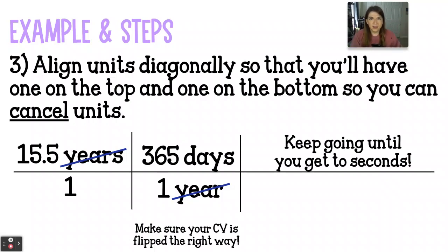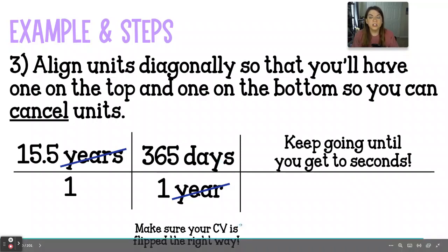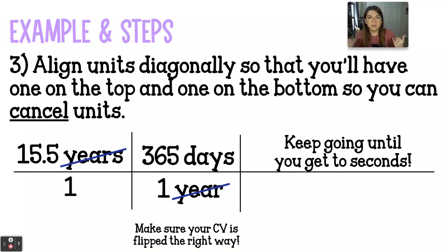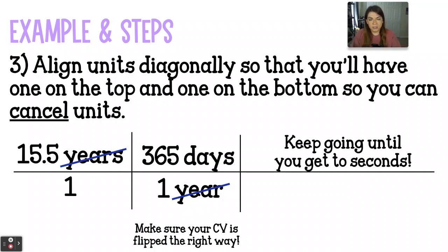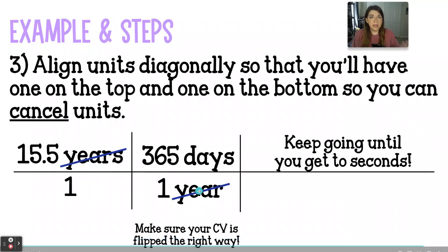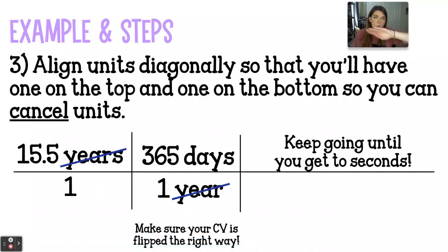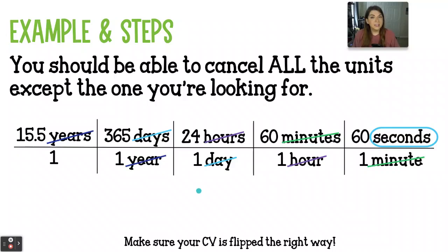Make sure your conversion factor is flipped the right way. My issue with dimensional analysis, going back to my 7th or 8th grade experience, is that I would get the correct conversion factor but put it into my lineup upside down. It's very important that you put it in right side up, because otherwise you're going to get the wrong unit at the end — you'll wind up with the inverse. If we have the years on the top and years on the bottom, that's how you know you've done it right. By the end, you should be able to cancel all of the units except for the one that you're looking for.